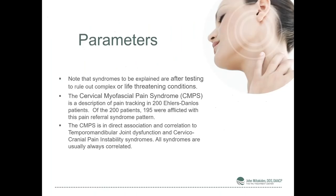Note that the syndromes to be explained are after complete testing, and we have no life-threatening conditions. The cervical myofascial pain syndrome is a syndrome that I've personally coined, and we actually tracked 200 Ehlers-Danlos patients. Of those 200, 195 had this syndrome, so I would consider the two being fairly integral. The cervical myofascial pain syndrome is in direct association and correlation with TMJ dysfunction and cervical cranial instability syndromes — all syndromes are usually correlated.